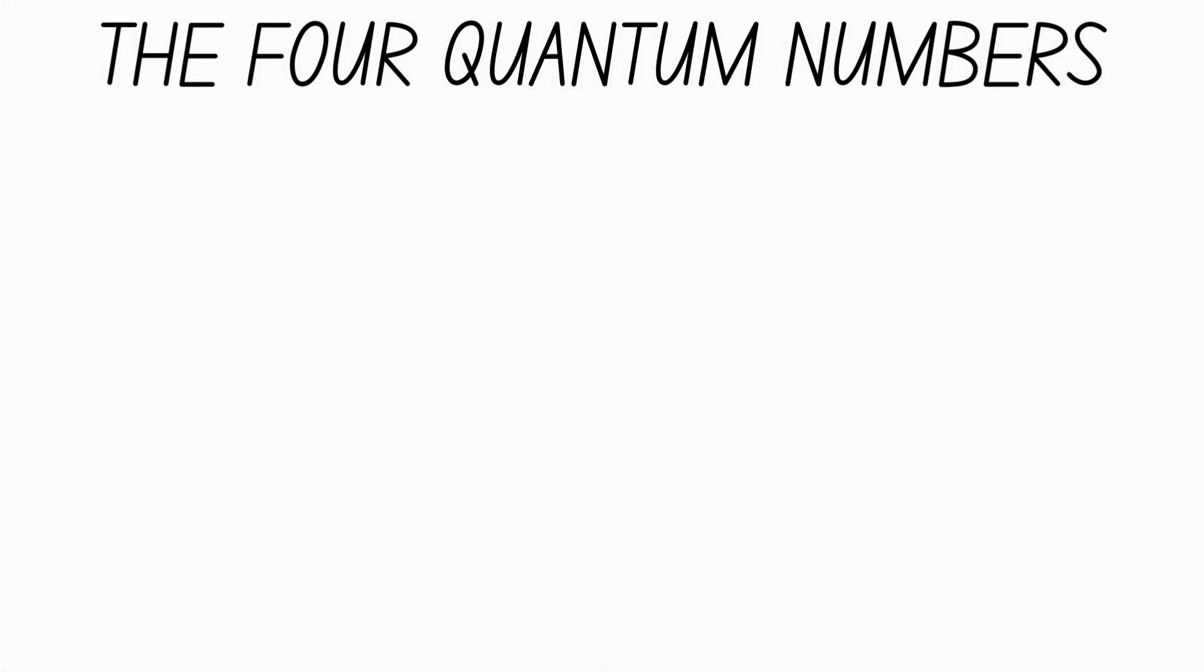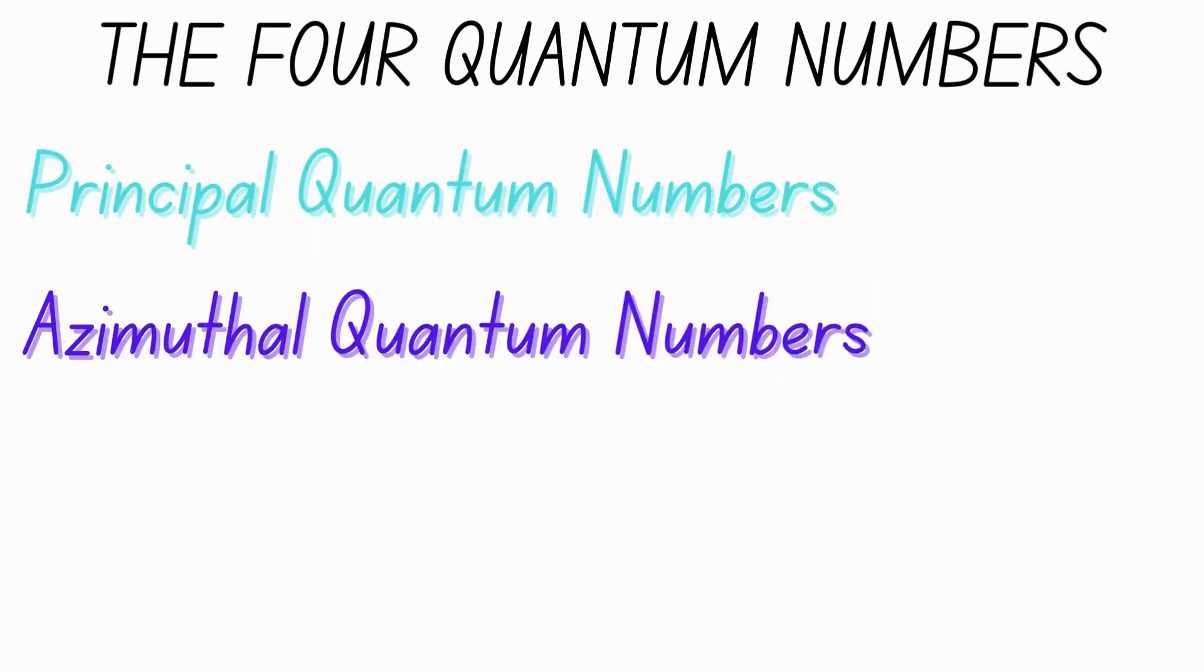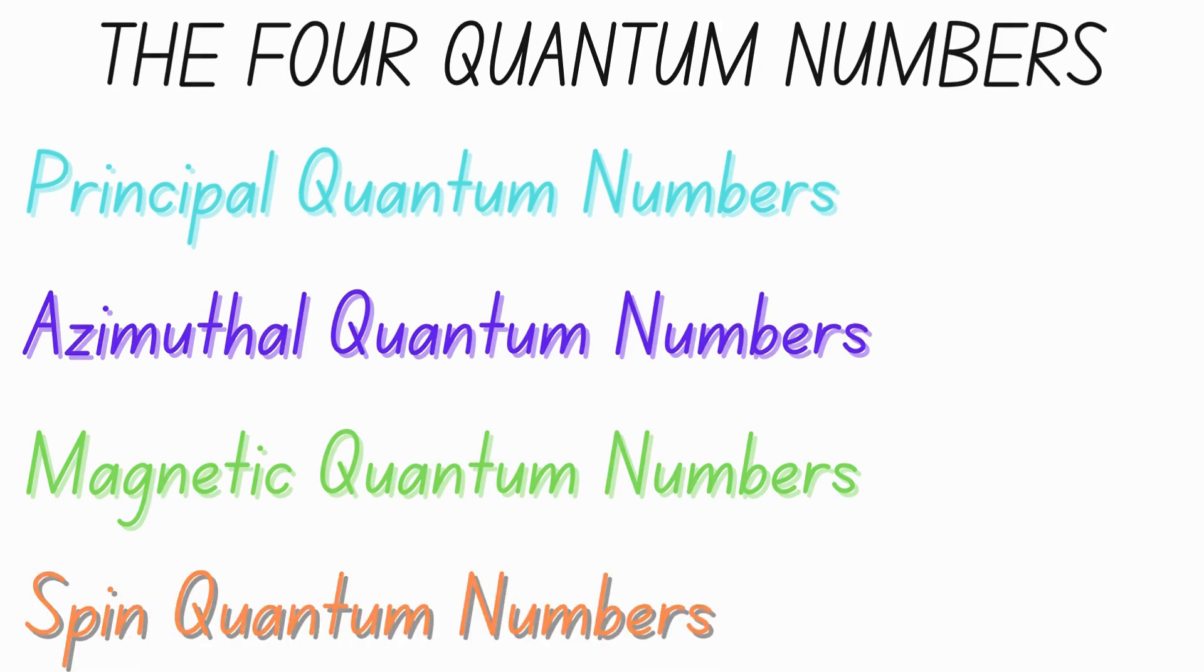The four quantum numbers are principal quantum number, azimuthal quantum number, magnetic quantum number, and spin quantum number.